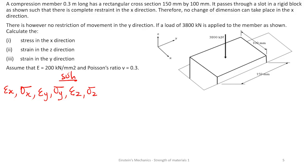Based on what the question states, there is complete restraint in the x direction — no movement, therefore no change in dimension. This means strain in the x direction equals zero.